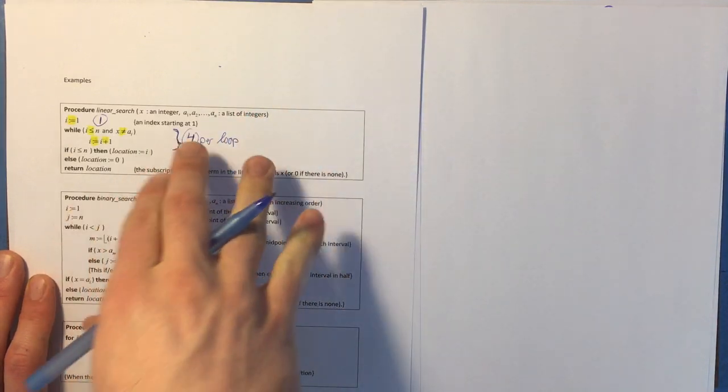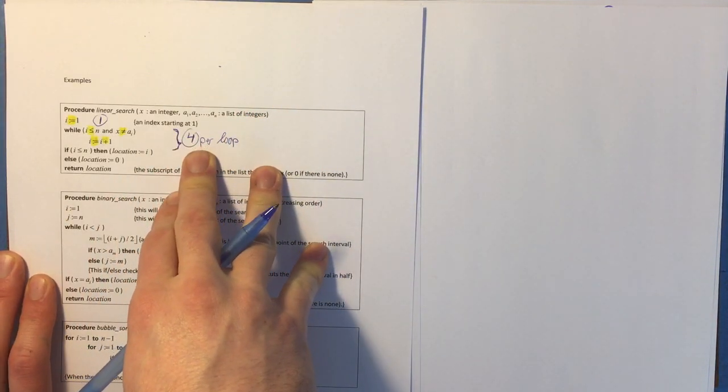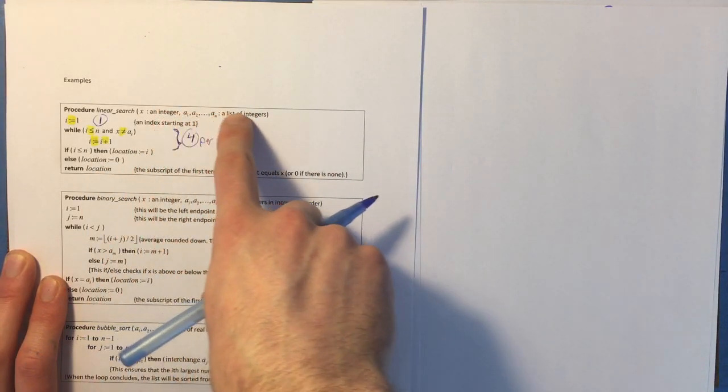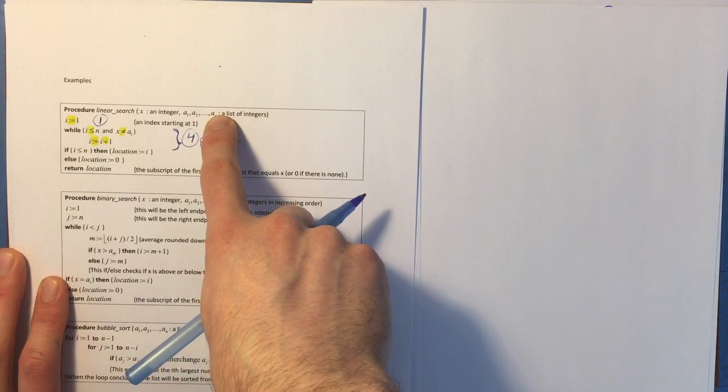And the question is, how many times is that loop going to be computed? Well, worst case scenario, you're going to search all the way through the entire list until you get to the end of the list.